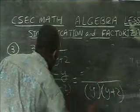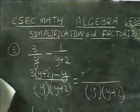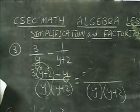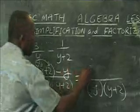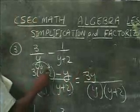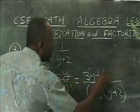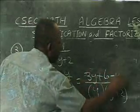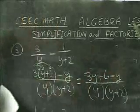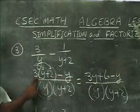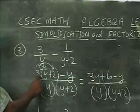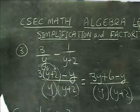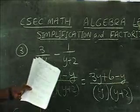Now the top part: I multiply three by y and three by two. Three by y gives us 3y, and three by two gives six. Then we have minus y by itself outside of the bracket. Remember that minus y is not affected by the three — the three only affects what comes directly in the bracket. This is a different term by itself.